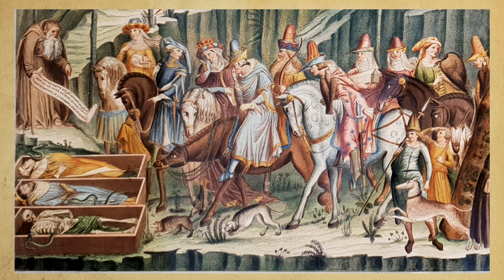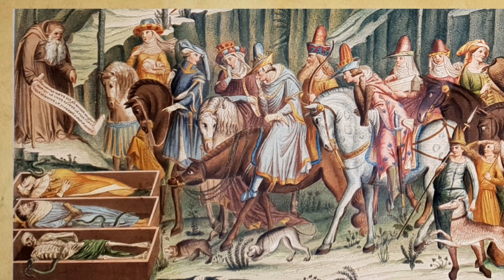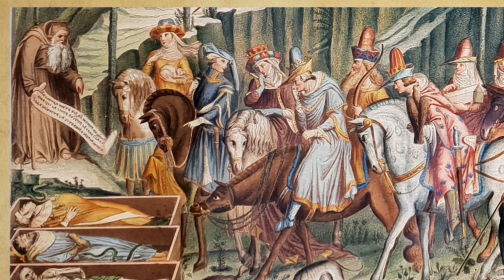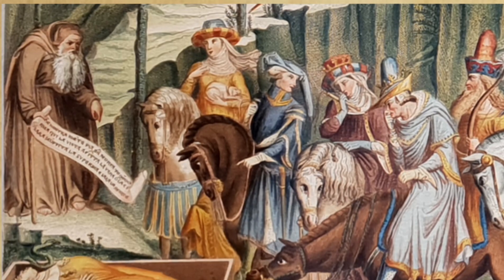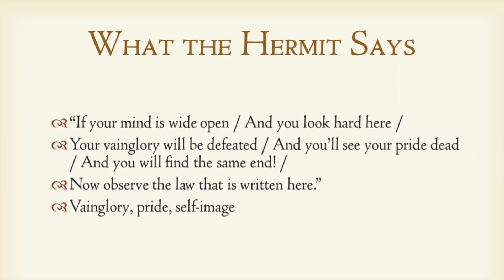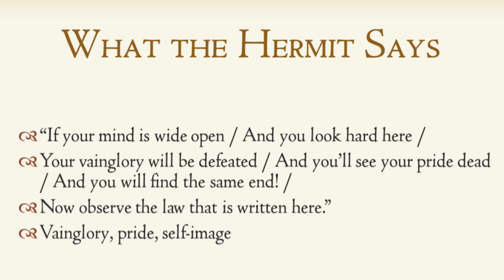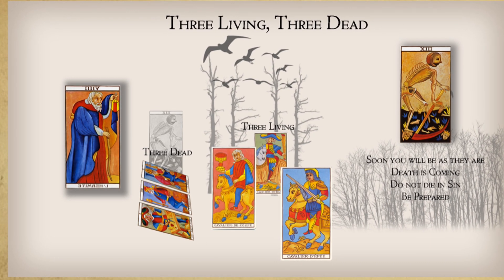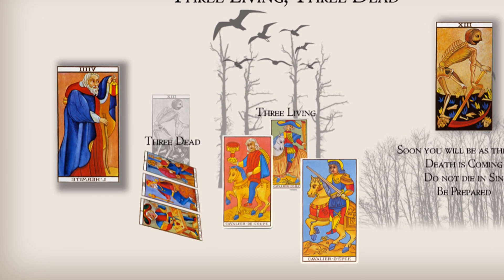There is a particularly splendid example of Three Living, Three Dead that forms part of a series of vast murals in the Campo Santo in Pisa, only a few yards from the famous Leaning Tower. A hunting party of nobles encounters three corpses. A hermit provides moral insight, and we know what he's saying because he's holding the medieval equivalent of a speech bubble — they didn't have speech bubbles, so they had to hold manuscripts. The hermit says: 'If your mind is wide open and you look hard here, your vain glory will be defeated and you'll see your pride dead and you will find the same end.' In other words, your worldly status is transitory — your fancy clothes and titles are not going to save you from ending up like these corpses.